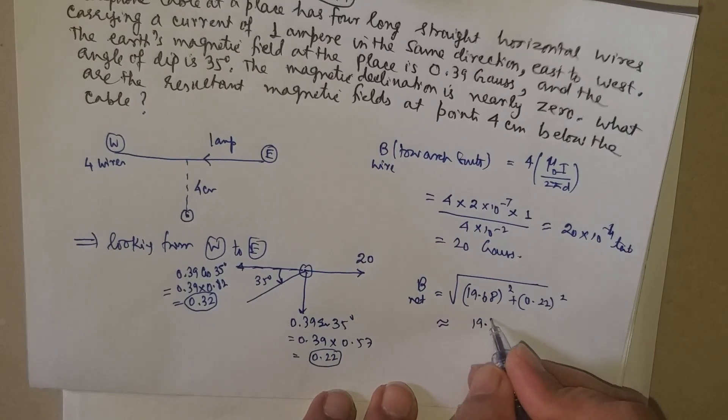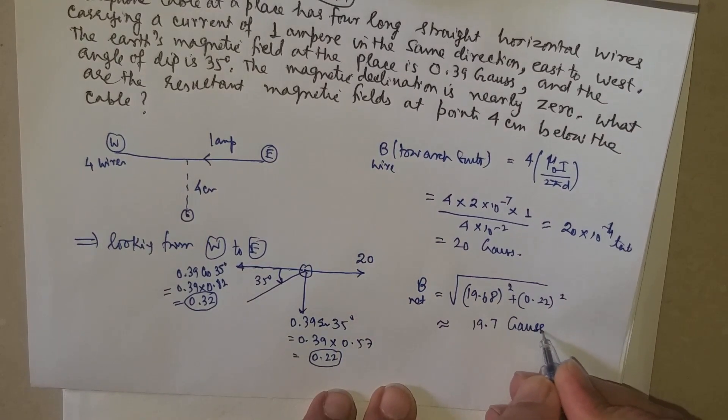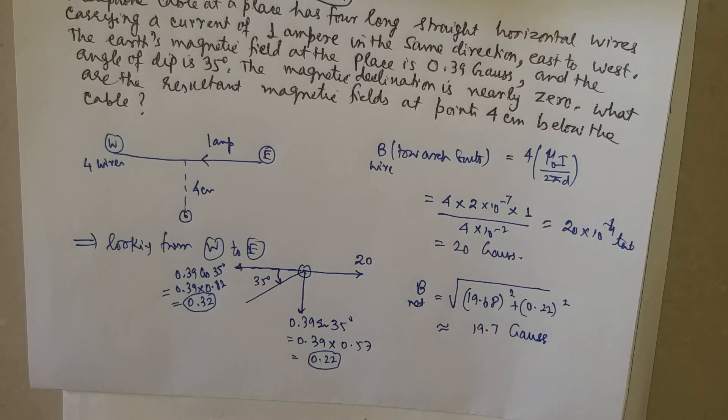This comes out to around 19.7 gauss, which is the net magnetic field at a point which is 4 centimeter vertically below the wire.